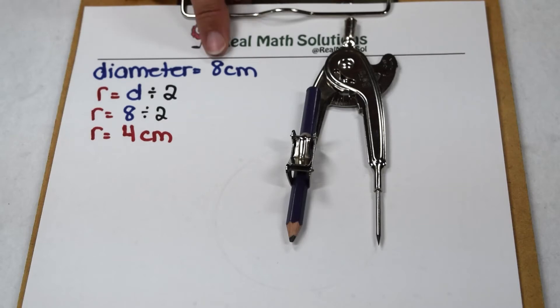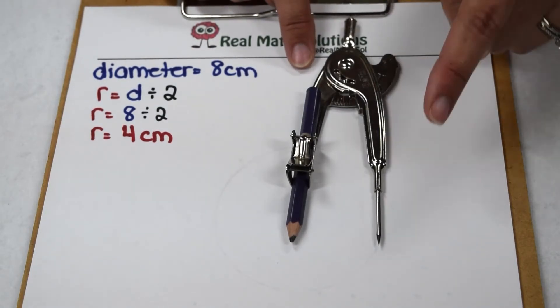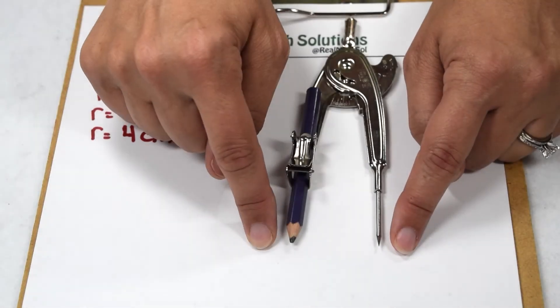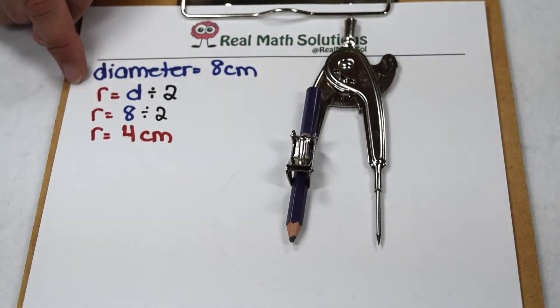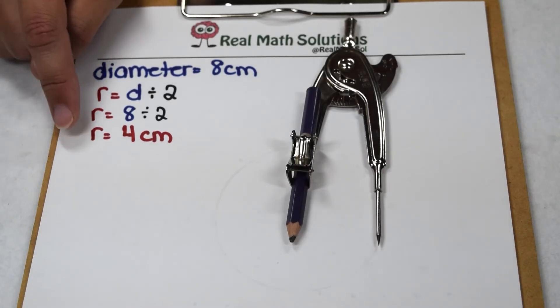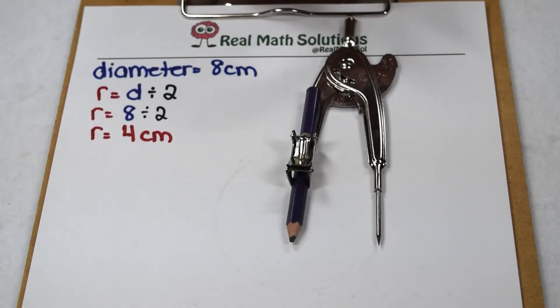We've been asked to create a circle that has an eight centimeter diameter. Well, we've already established that our compass actually measures the radius, the distance from the center point to the outside edge of the circle. So the first thing we have to do is find the radius of that circle. Radius is half the diameter, so I'm going to divide eight by two, and that tells me my radius is going to be four centimeters.